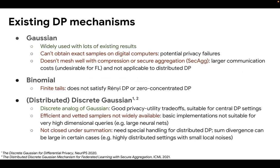Recent work also introduces the discrete Gaussian mechanism, which in the central case provides basically the same privacy as the continuous Gaussian. While this is really good, sampling from a discrete Gaussian is not very easy at this stage because efficient sampling implementations are not yet widely available in packages like NumPy and TensorFlow. Moreover, discrete Gaussians are not closed under summation, so in settings such as federated analytics where we have a huge number of clients, the distributed version of discrete Gaussian could underperform due to small local noise variances.